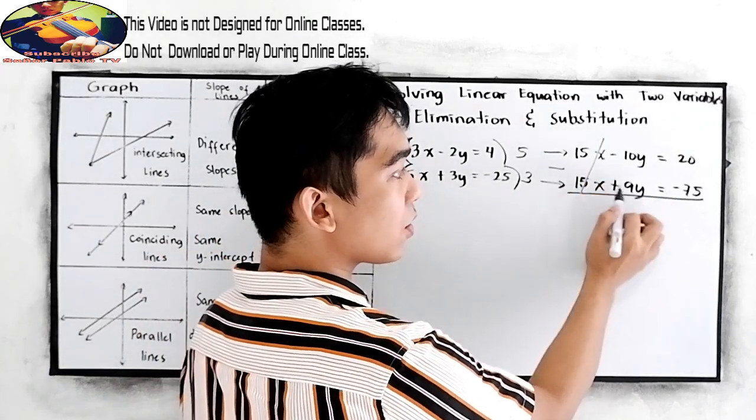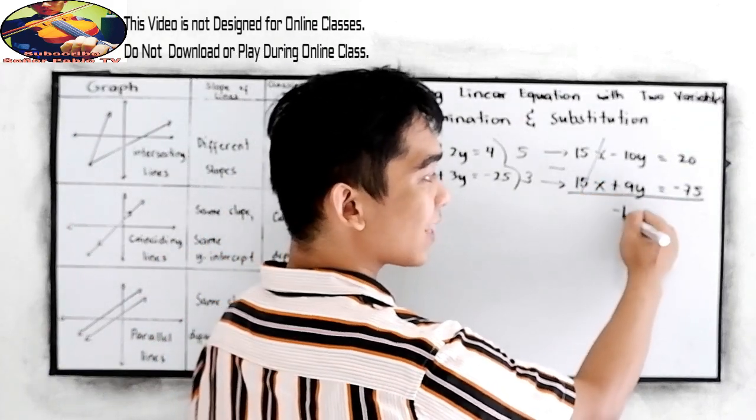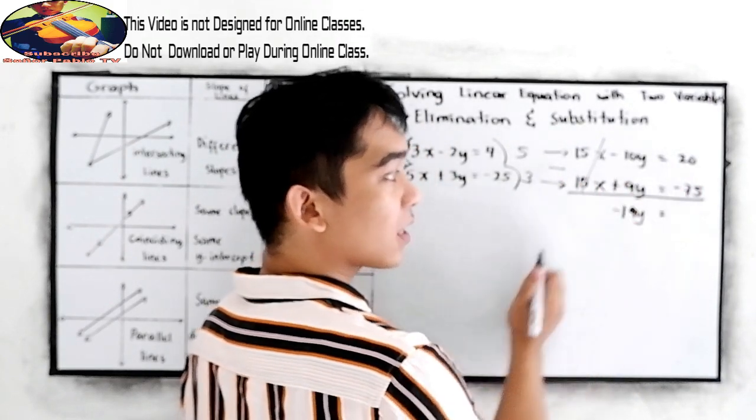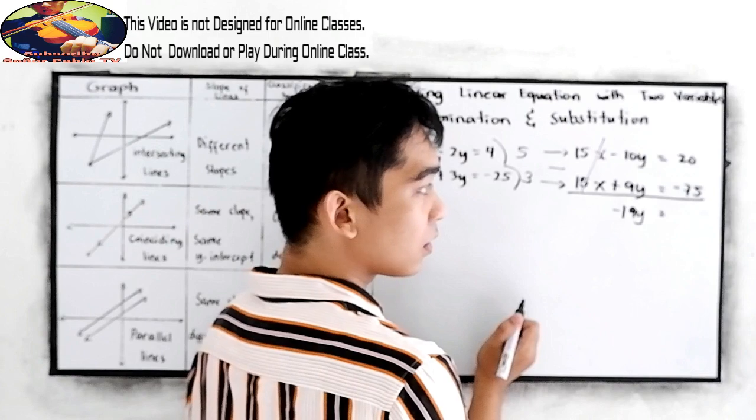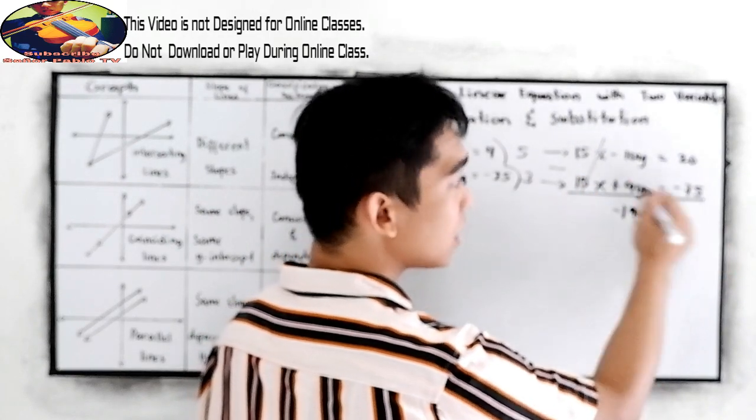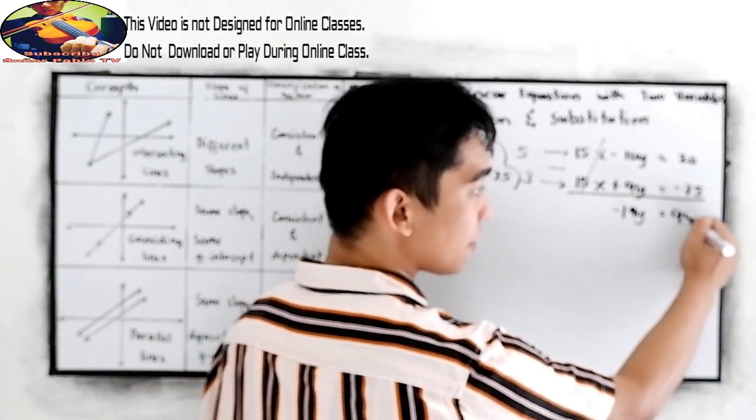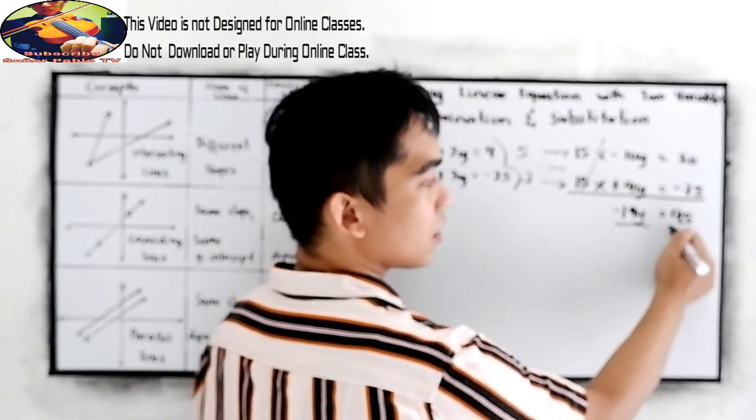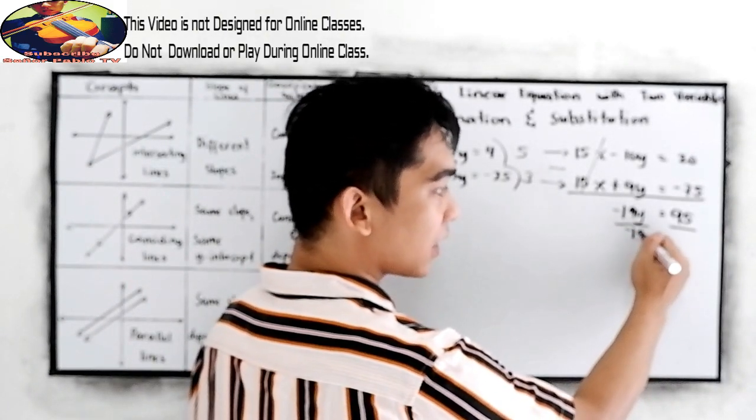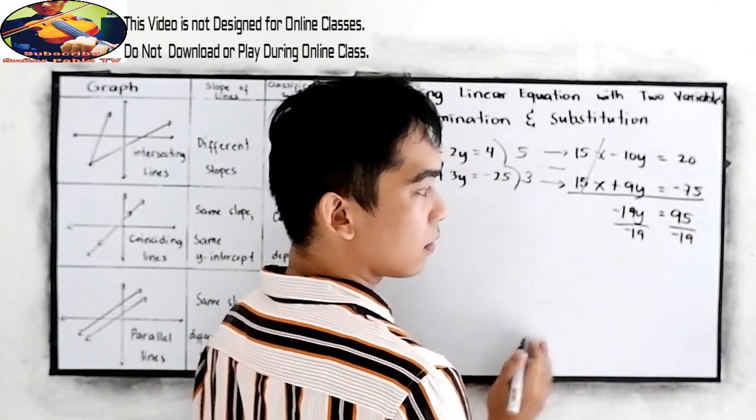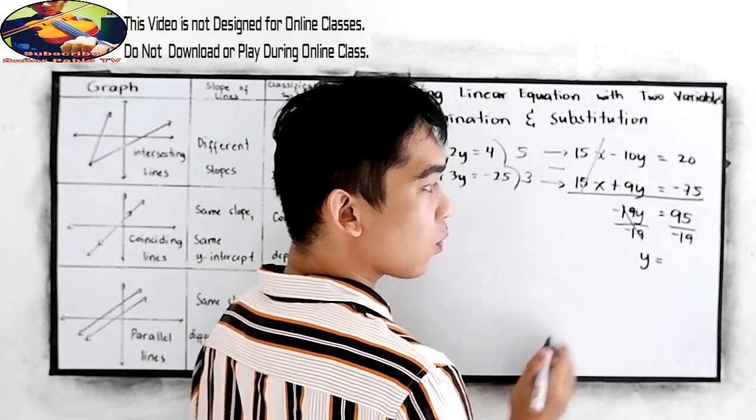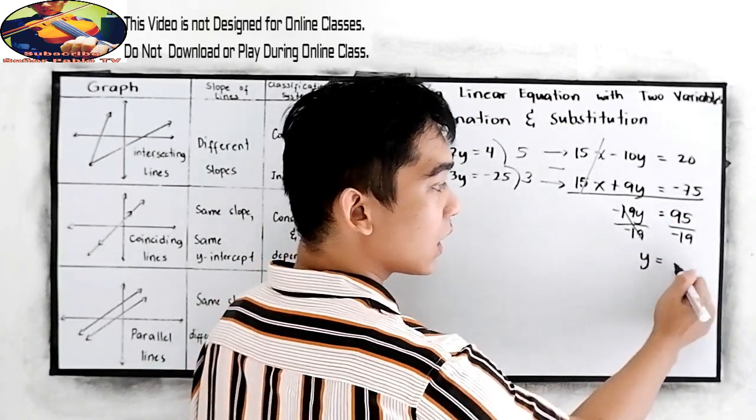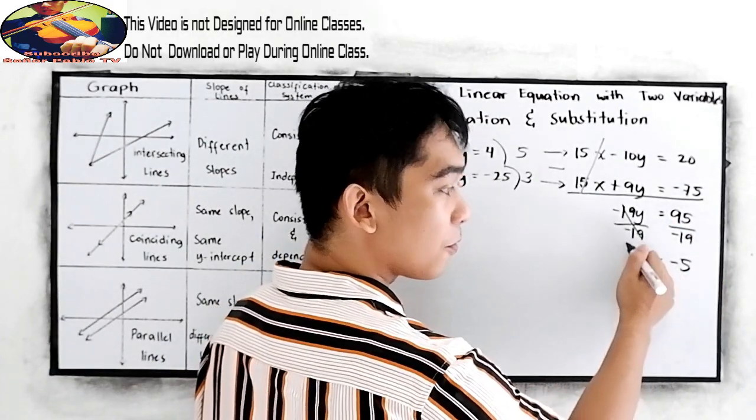So, negative 10y minus 9y, that is negative 19y, is equal to 20 minus negative 75, so that will be 95, positive 95. Divide by negative 19, so we have y is equal to 95 over negative 19, that is negative 5.